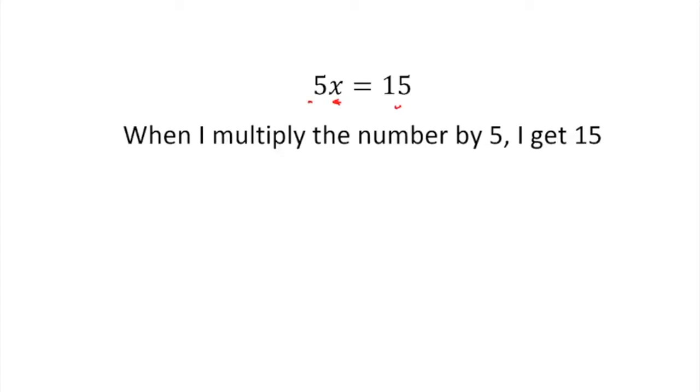And when I put it that way, it's quite easy for me to figure out what the number, that mystery number that x is standing in place of is. The answer there is obviously going to be 3, because it's 3 that when I multiply by 5, I get 15.